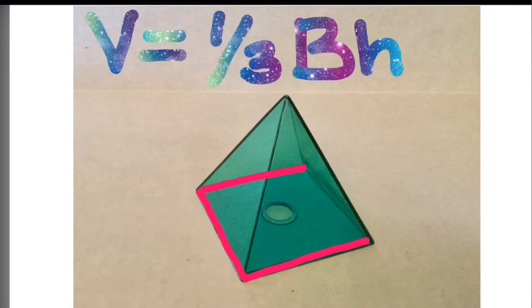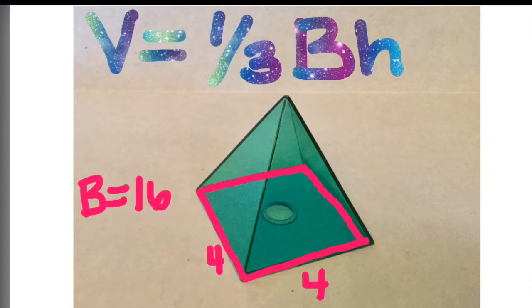We have the rectangle. Remembering that rectangle is side times side, length times width, or base times height. In this case, it's four times four. So the area of the base is 16.